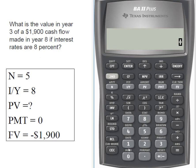My payment is zero. My future value is $1,900. But remember, it's got to be a negative. So that's my future value. And because I'm moving the cash flows earlier in time, I'm going to compute present value.